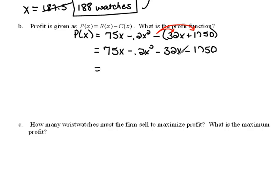And then we can collect our like terms. Now I'm going to put this in the right order as we go. So I'm going to write this as negative 0.2x squared. And then we're going to combine our 75x and our negative 32x into positive 43x. And then we have minus 1750. This now is our profit function.